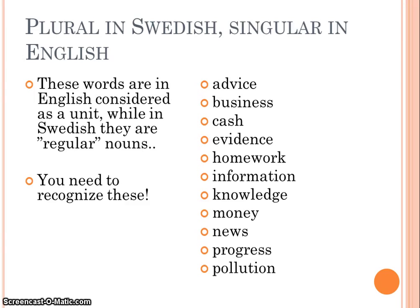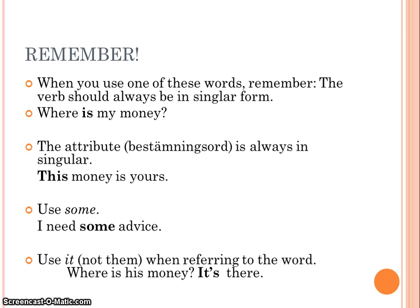The interesting thing is that you have to conjugate the verb in singular form. You also need to learn how to recognize these nouns. When you use one of these words, remember the verb should always be in singular form. For example: where is my money? The attribute is always in singular: this money is yours. Use some if you want to give an example: I need some advice. Use it, not them, when you refer to the word: where is his money? It's there.